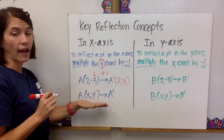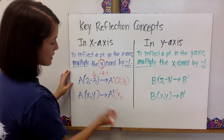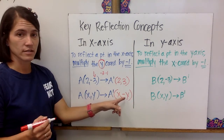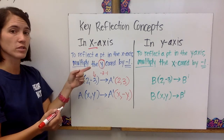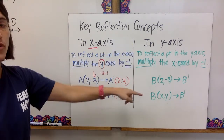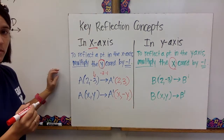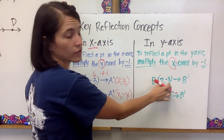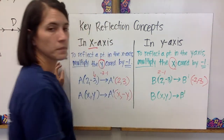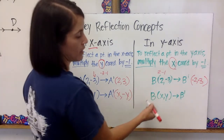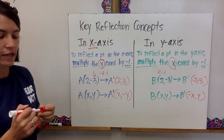Algebraically, if you have a point A(x, y), your image A prime would have the x-value stay the same and the y-value go to its opposite: (x, negative y). If you want to reflect in the y-axis, then you multiply the x-coordinate by negative 1. For example, if B is (2, negative 3), then B prime would be (negative 2, negative 3). Algebraically, if you have a coordinate (x, y), the x becomes its opposite and the y stays the same: (negative x, y).